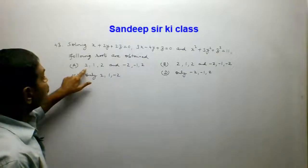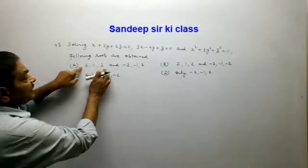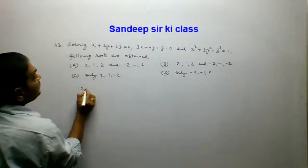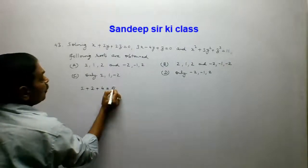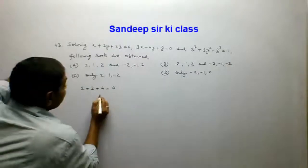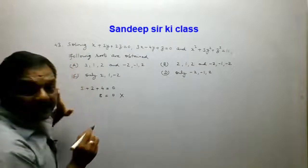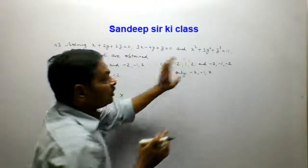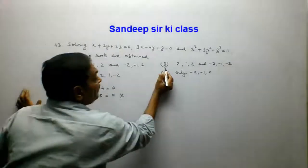Option A is (2, 1, 2), meaning X = 2, Y = 1, and Z = 2. Putting these values in equation 1 gives 2 plus 2 plus 4, which equals 8, not 0. So this is not satisfied. Since option B also contains (2, 1, 2), both options A and B are eliminated.